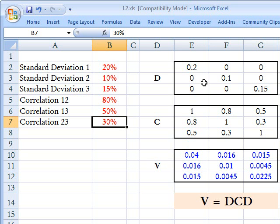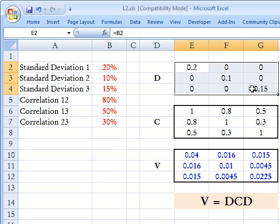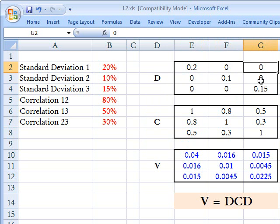We need two matrices. First, we have matrix D, which is a diagonal matrix. By diagonal matrix, I mean that it's square and has zeros in all of the cells except in the diagonal. And what do we have in the diagonal? We have the standard deviations.